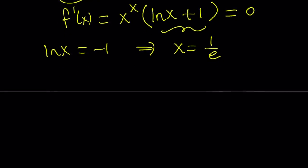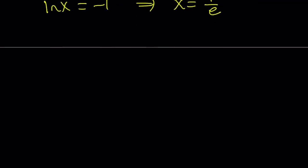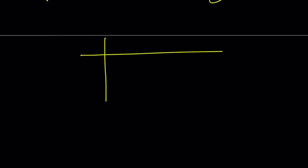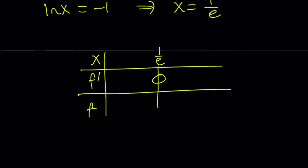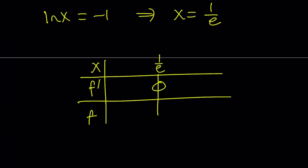So, what happens to the right and to the left? I'm going to go ahead and make a table here. So, my table is going to look like this. x, f prime, and f. The only root for the derivative is 1 over e. The question is, what's going to happen to the right of 1 over e and to the left?